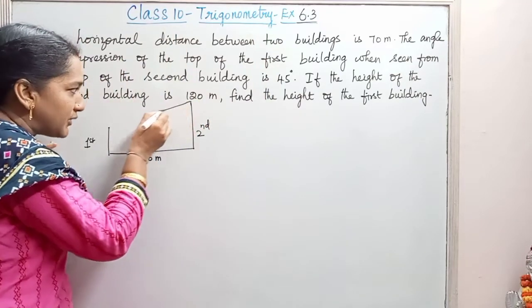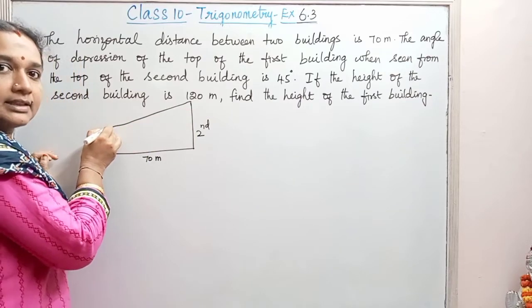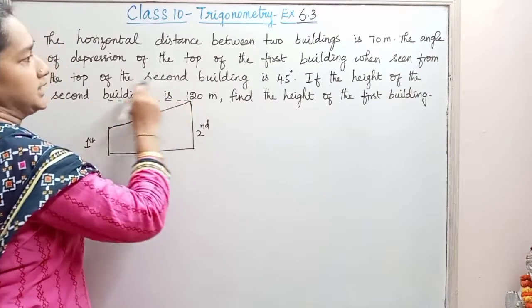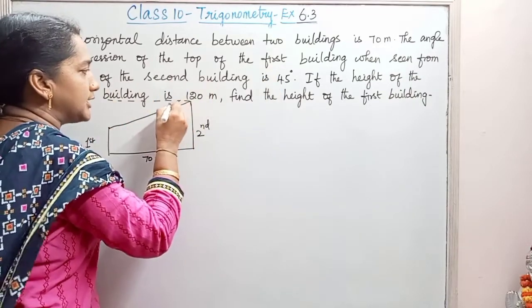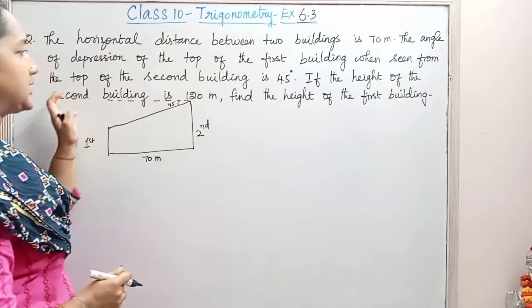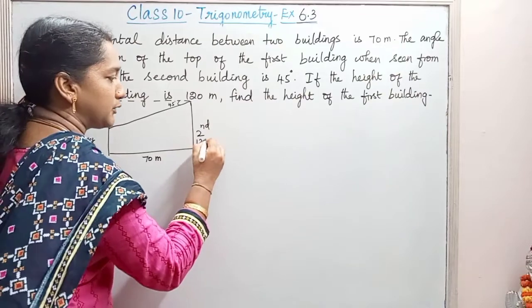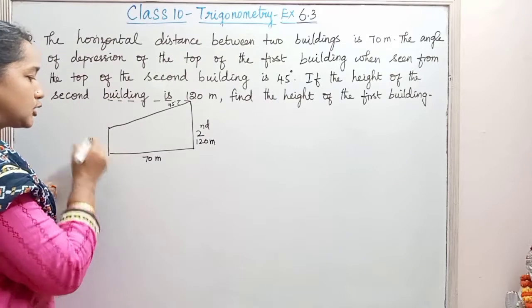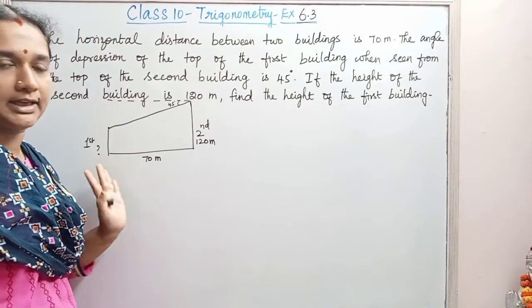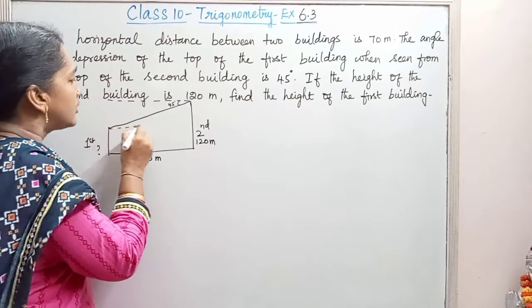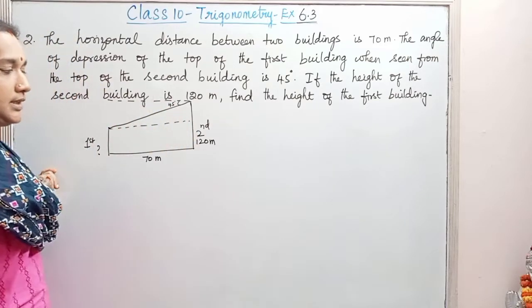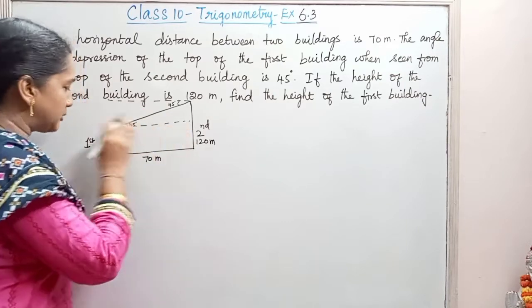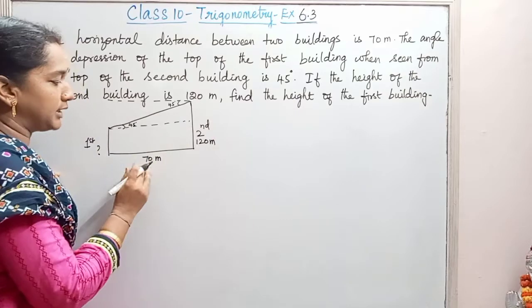So from the top of the second building, if we look at the first building, we get the angle of depression of 45 degrees. So this angle is 45 degrees. The height of the second building is 120 meters, and we need to find the height of the first building. This is the horizontal distance and we get this angle as 45 degrees.